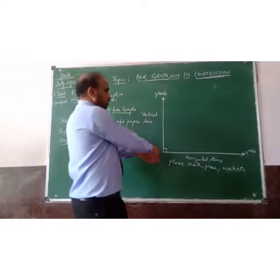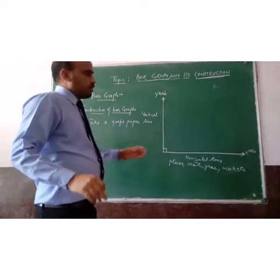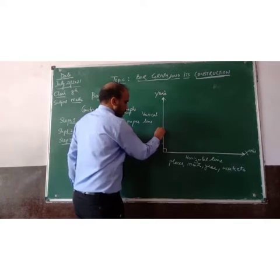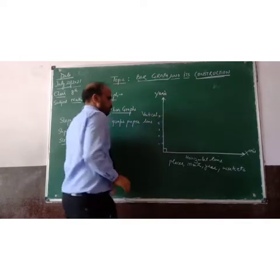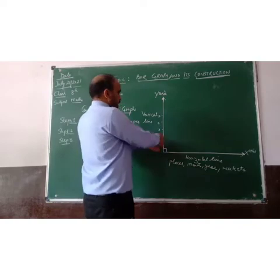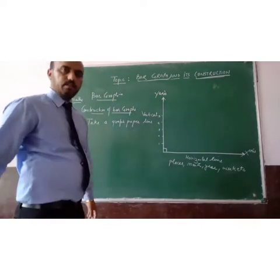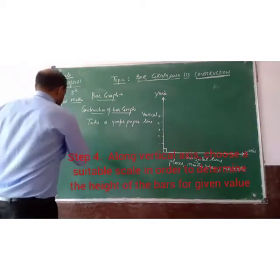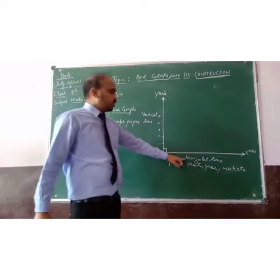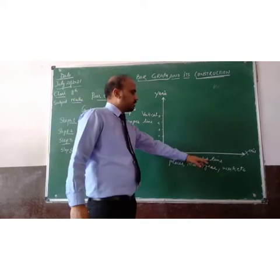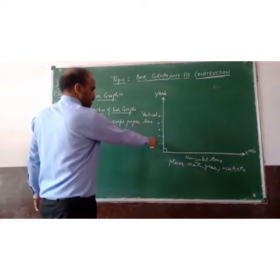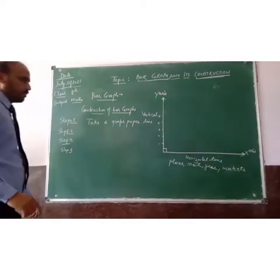Along the vertical axis, use a suitable scale — for example, 1, 2, 3, 4, and so on — to determine the height of the bar for a given value. Step four: along the vertical axis, use a suitable scale in order to represent the given data.